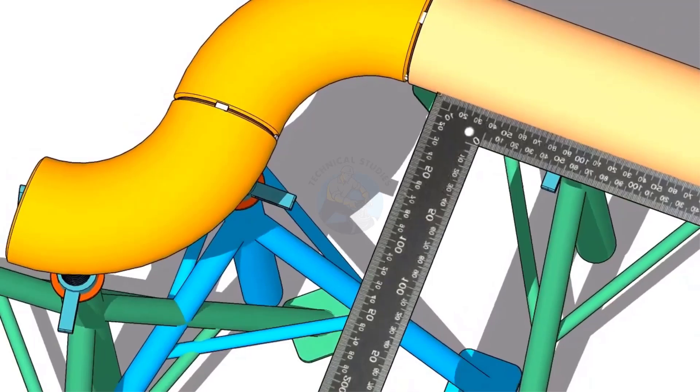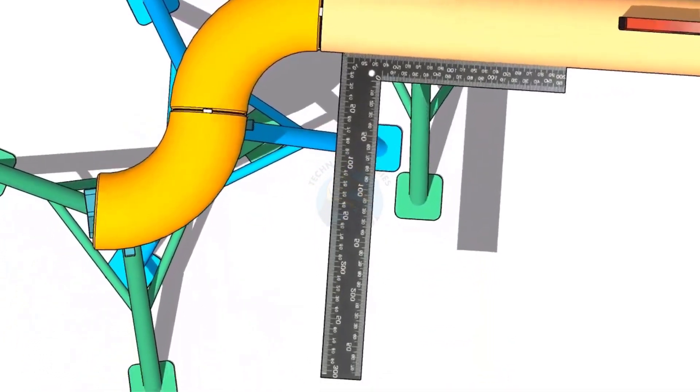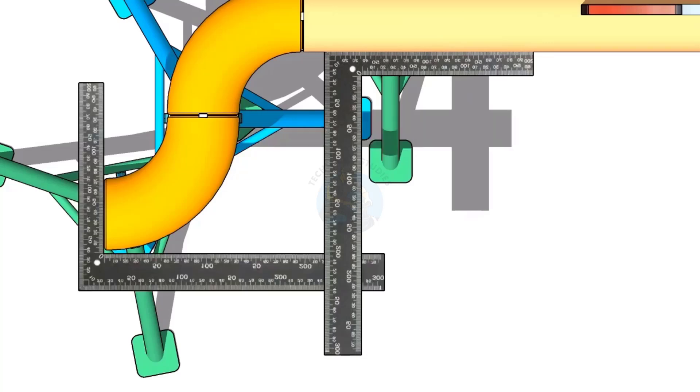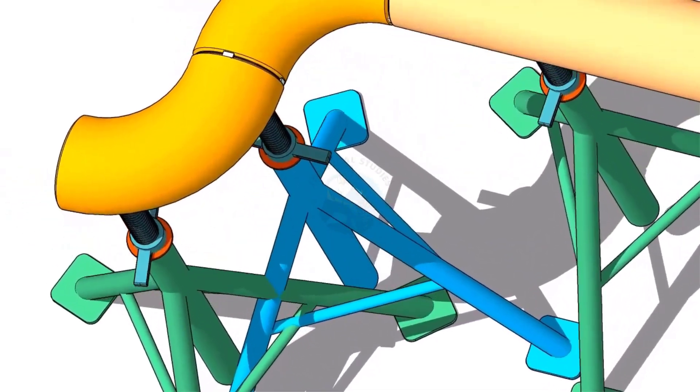Put two right angles, one on the face of the elbow and one on the pipe side. Now use another right angle and check the squareness. Tack weld on both sides of the elbow.